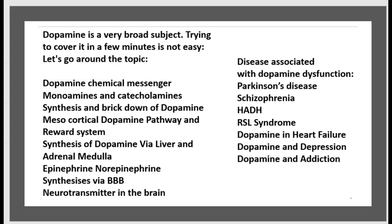Topics covered include: dopamine as a chemical messenger, monoamine and catecholamine, synthesis and breakdown of dopamine, mesocortical dopamine pathway and reward system, synthesis of dopamine via liver and adrenal medulla, epinephrine and norepinephrine, synthesis of dopamine via the blood-brain barrier, and dopamine as a neurotransmitter in the brain. Conditions associated with dopamine dysfunction include Parkinson's disease, schizophrenia, ADHD, and restless leg syndrome.